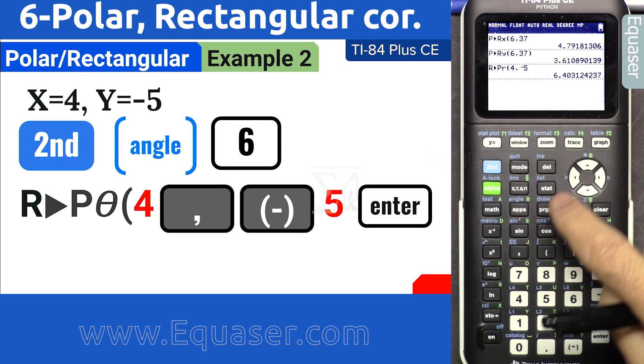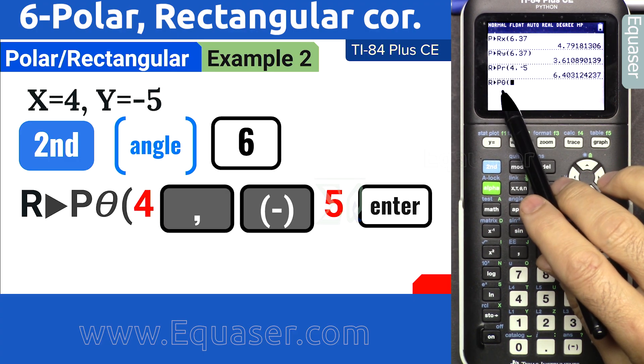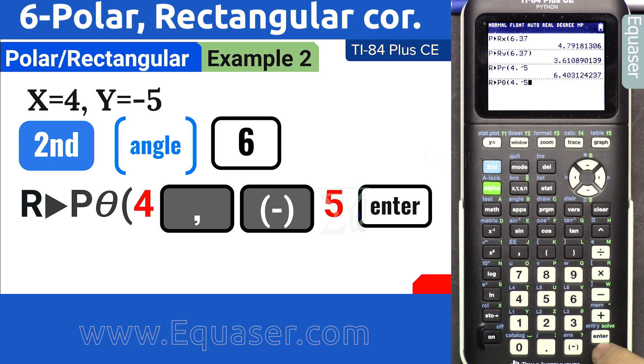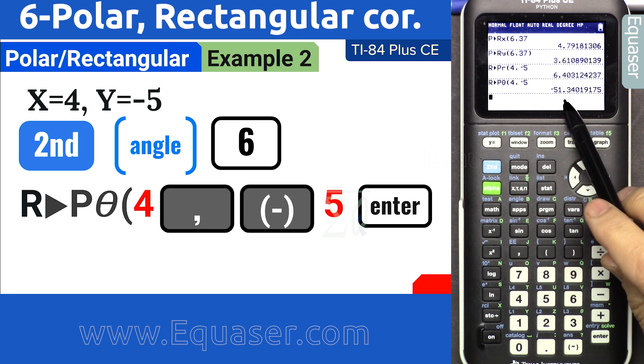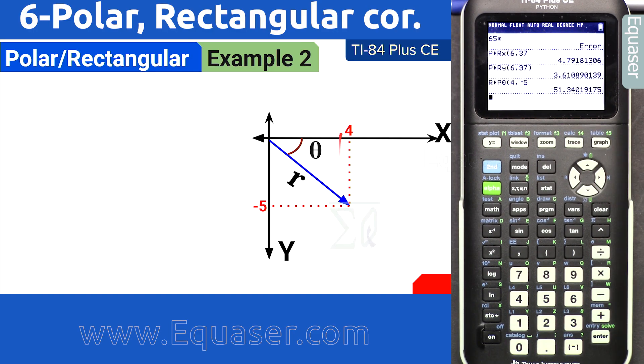Let's do the theta. Second function angle, this time 6. It says rectangular to polar get theta. 4 comma minus 5 enter. So the angle is now minus 51 degrees. As you can see, the angle is below x-axis. Minus 51 makes sense, so the answer is correct.